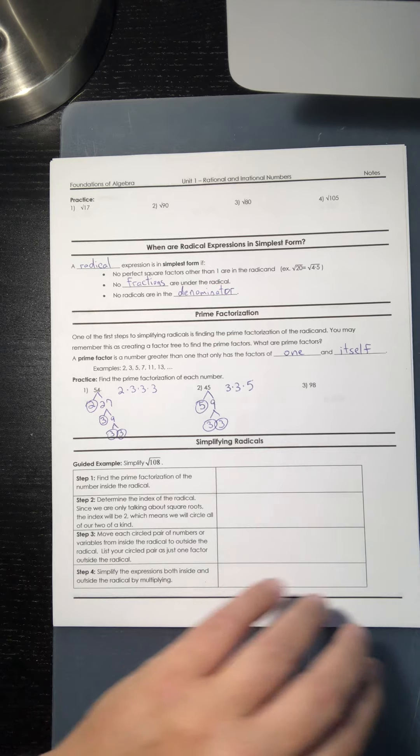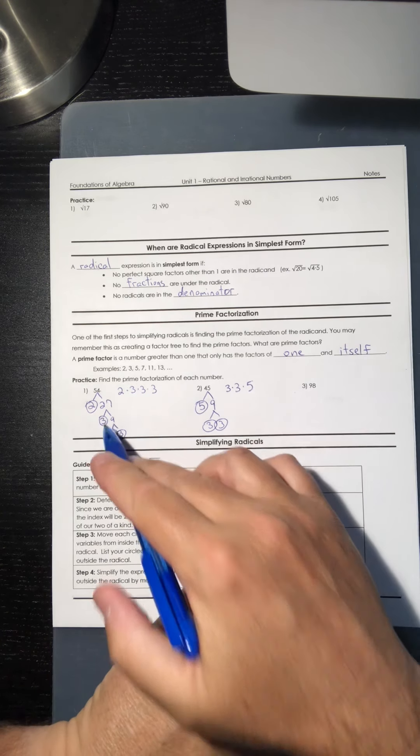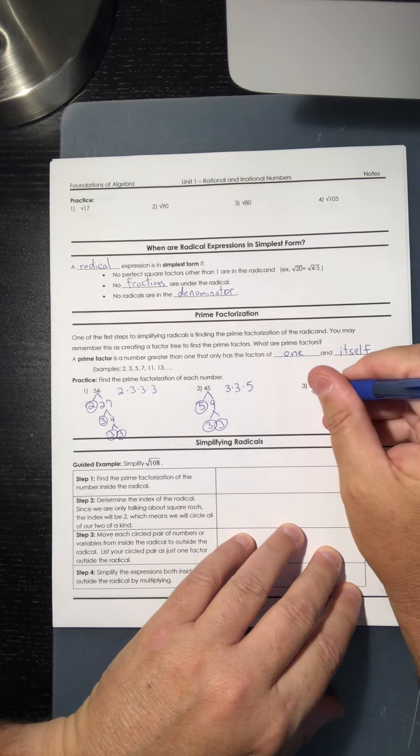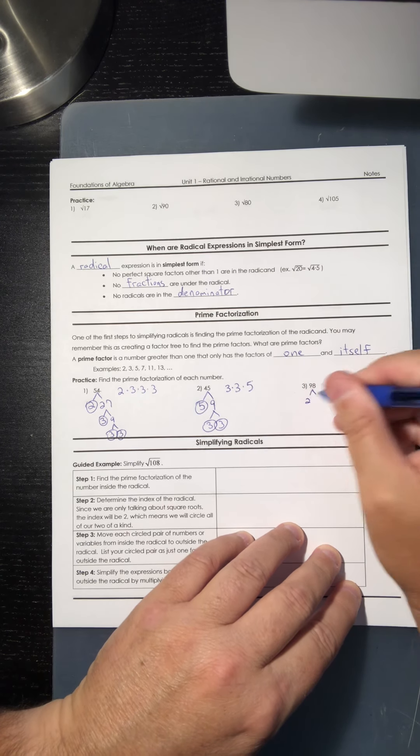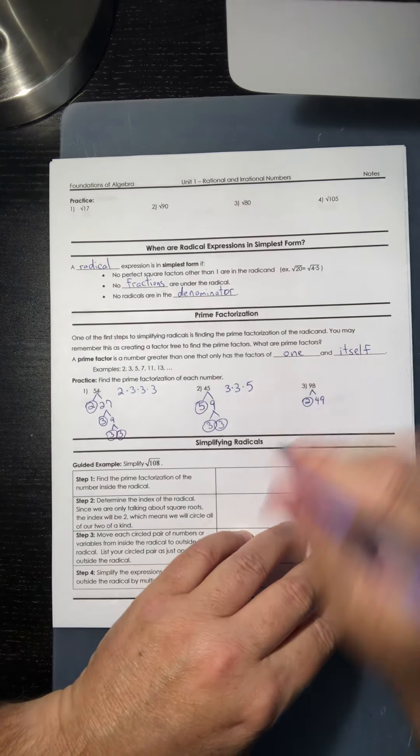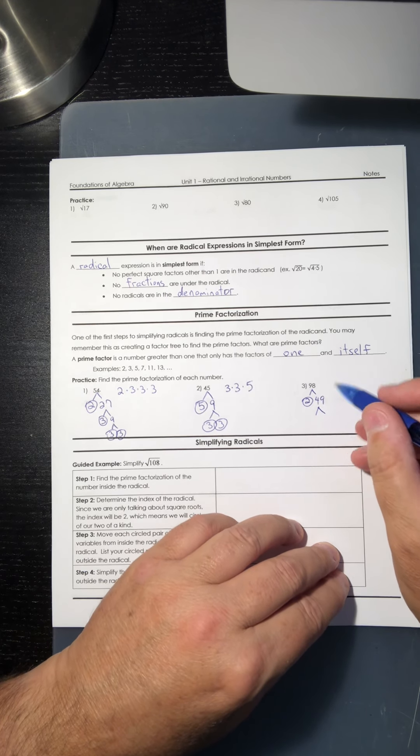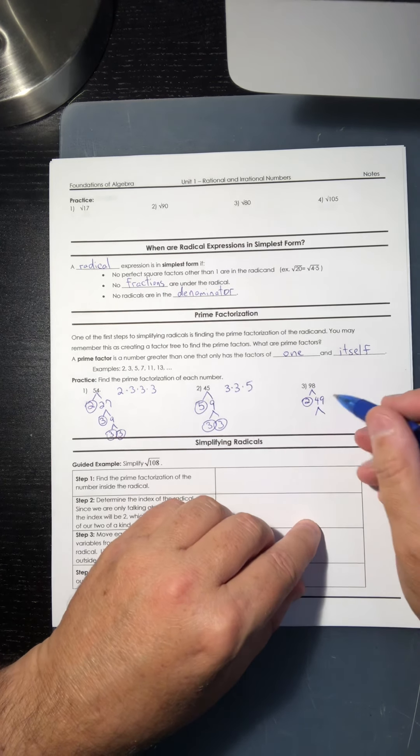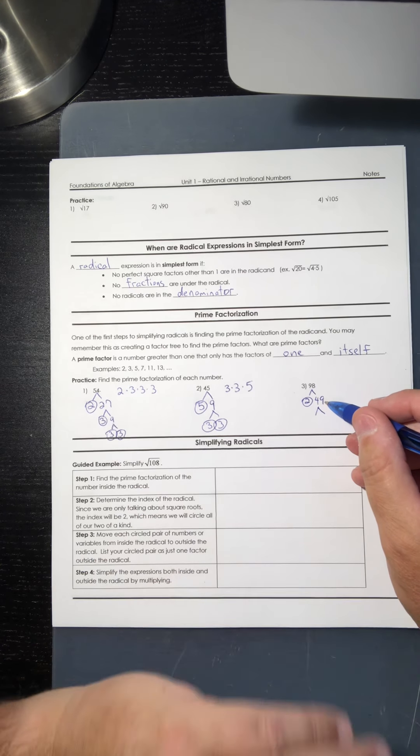Let's do 98. 98 seems like a big number, but it's actually gonna be shorter than this one over here. We know 2 goes into it because it's an even number. 98 divided by 2 is 49. So 2 is a prime number. If you don't know what numbers go into 49, well it's not even so we know 2 doesn't. So try 3. Do 49 divided by 3. It doesn't give you a whole number, so that doesn't work.